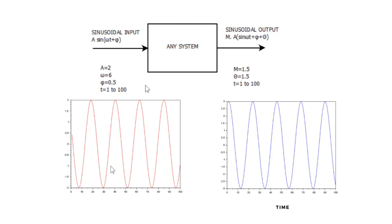Before we talk about how to plot Bode plots, I want to give you some background information on why these three things are important and what relationship we are trying to see. Whenever we talk about frequency response, we are talking about the steady state of the system — it means the transient has died out, or the real part of the transfer function has vanished, and only the imaginary part remains.